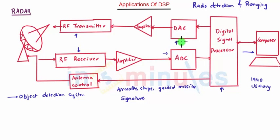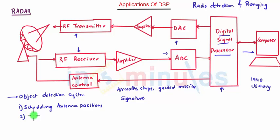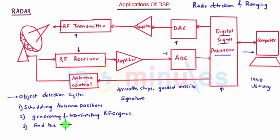The function of the digital signal processor in modern radar covers all functions such as scheduling the antenna positions, generating and transmitting the RF signal, finding the target and keeping track of it, and also storing and providing information to the computer.